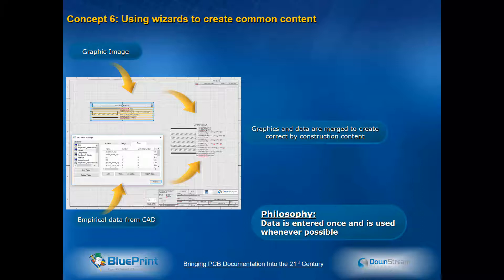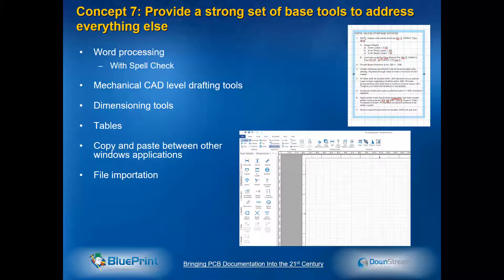We wanted to help you by using wizards or templates to create common content. We start with a graphic image, import the CAD database, and it creates our layer stackup — expanding to the proper layer count, adding the dielectrics and copper thicknesses. Everywhere you look at text in this tool, it's a word processor, with font control, paragraph control, justification, superscript, subscript, all caps, strikeout, and spellcheck that is localized to the language being used.